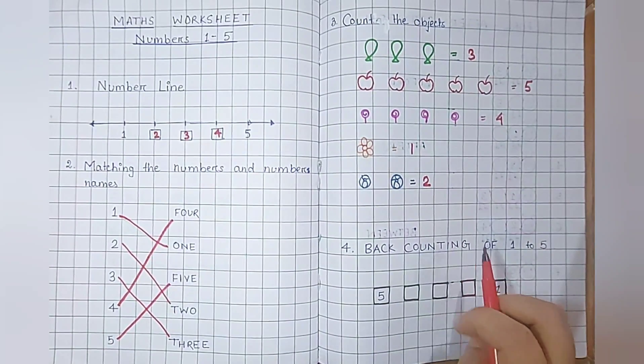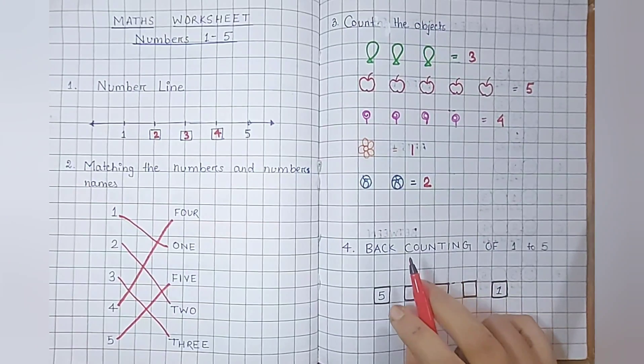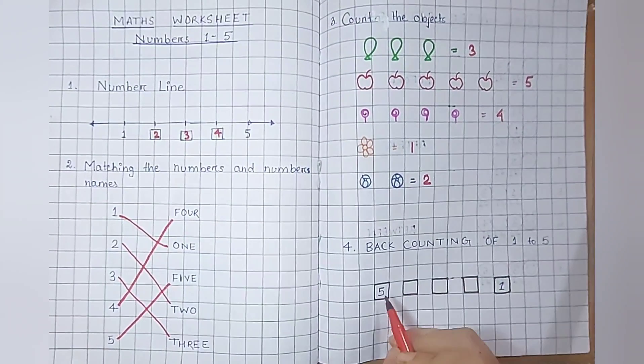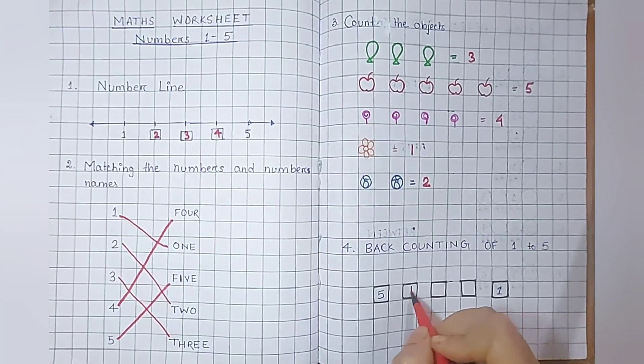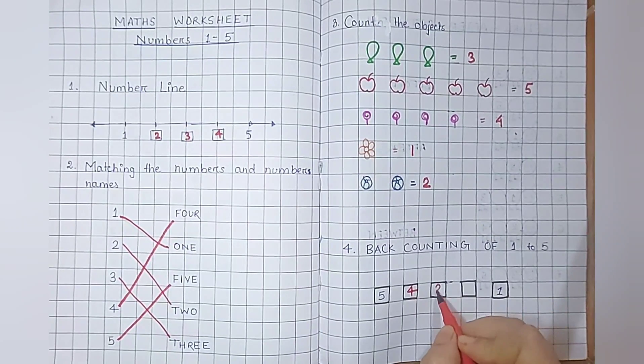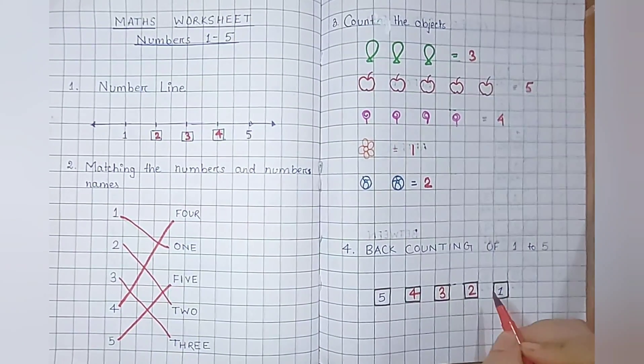Students need to know what is back counting. Here, five is given. The next one is what? Four. Next, three, two, and one.